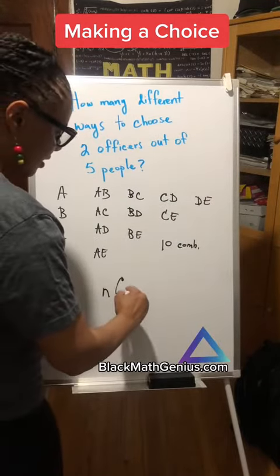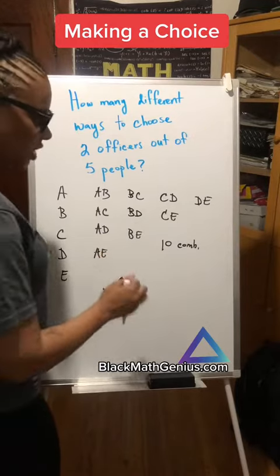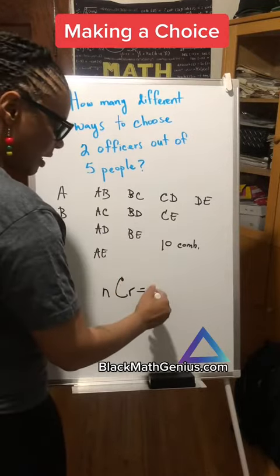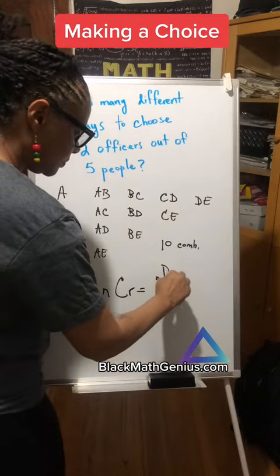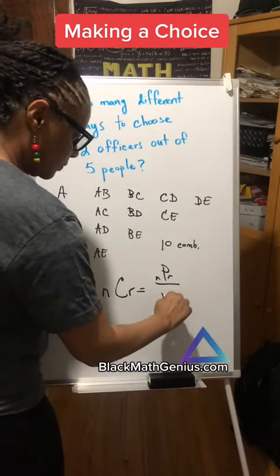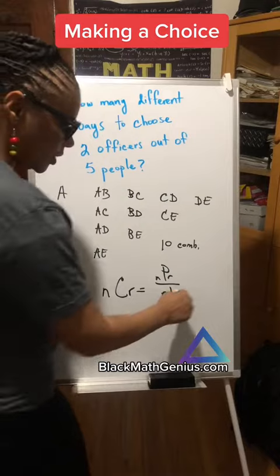Now we have NCR, which is very similar to NPR, but here's the difference. We have NPR over R factorial. What does that look like?